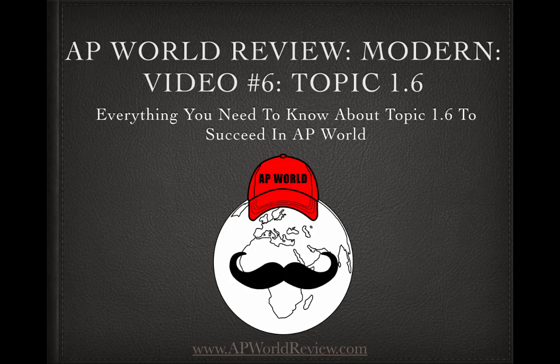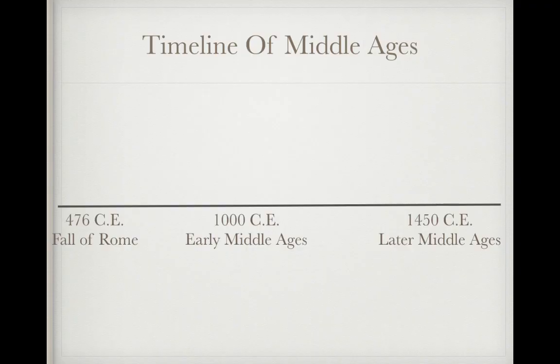Welcome back, AP World people. We are on video number six, topic 1.6, which is going to focus on Europe during the Middle Ages. The timeline of the Middle Ages begins in 476 CE with the fall of Rome, with the early Middle Ages by 1000 CE and the later Middle Ages by 1450 CE.